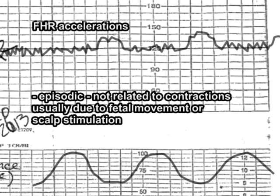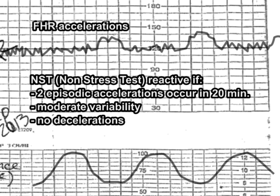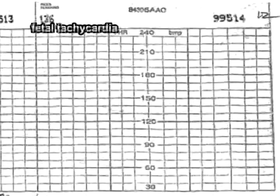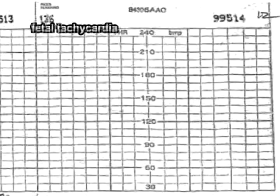Episodic accelerations are also a normal response to fetal scalp stimulation and are one of the three criteria that form the basis of the non-stress test. A non-stress test is said to be reactive, or normal, when two episodic accelerations occur over a 20-minute period with moderate variability and no decelerations in the fetal heart rate tracing. The FHR tracing depicted here would be considered reactive. Fetal tachycardia is said to occur when the baseline heart rate exceeds 160 beats per minute, as depicted here.